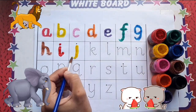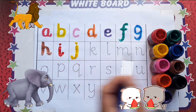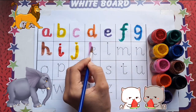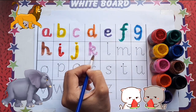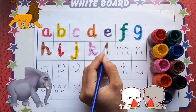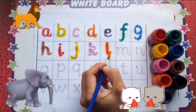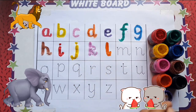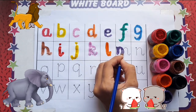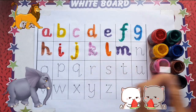Yellow color. J, J for jug. Pink color. K, K for kite. Orange color. L, L for line. Purple color. M, M for monkey.